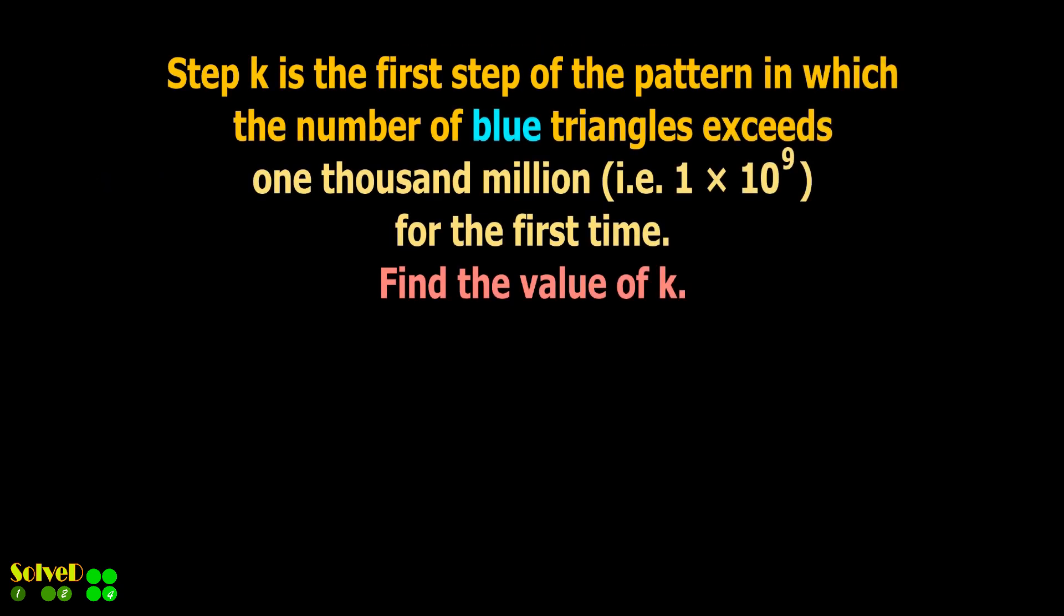Step K is the first step of the pattern in which the number of blue triangles exceeds 1000 million for the first time. Find the value of K.